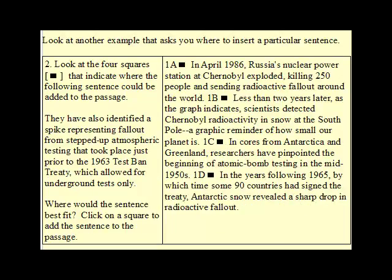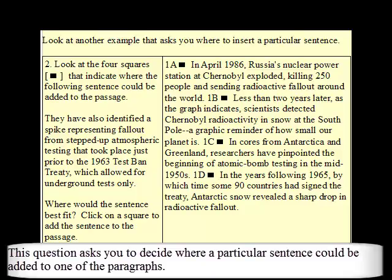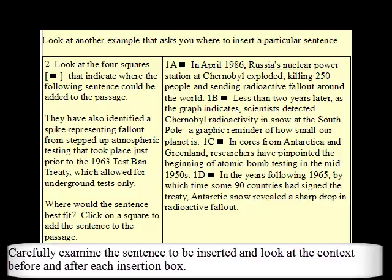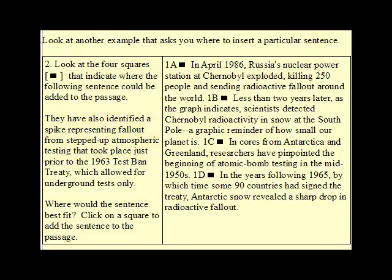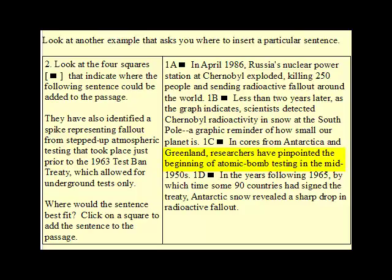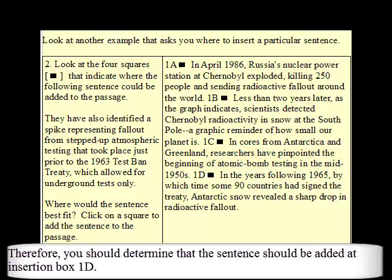Look at another example that asks you where to insert a particular sentence. Pause the video to read the question and the reading passage. This question asks you to decide where a particular sentence could be added to one of the paragraphs. Carefully examine the sentence to be inserted and look at the context before and after each insertion box. The sentence mentions that they have also identified a spike representing fallout from stepped-up atmospheric testing that took place, and the context before insertion box 1d mentions that researchers have pinpointed the beginning of atomic bomb testing. Therefore, you should determine that the sentence should be added at insertion box 1d.